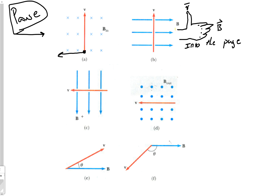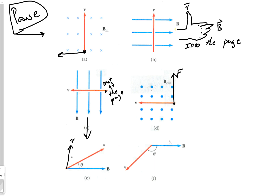For question C: fingers pointing down, thumb pointing to the left — your palm should be pointed directly at you, so the force is out of the page. For question D: the dots represent a field coming toward you, so hold your hand up like you're telling someone to stop — fingers pointing at your face, thumb aimed to the left — your palm faces upward, so the force is upward. For question E: the angle means maximum force is reduced, but the right hand rule still applies. Lay your fingers to the right with your thumb at a slight forward angle — your palm faces into the page.